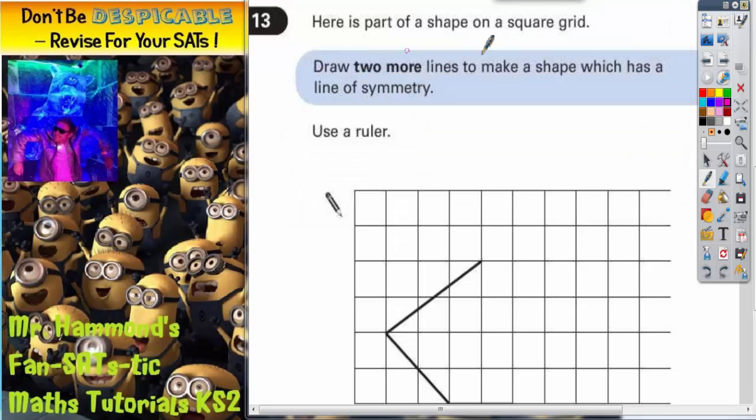Question 13. Here is part of a shape on a square grid. Draw two more lines to make a shape which has a line of symmetry. Use a ruler.